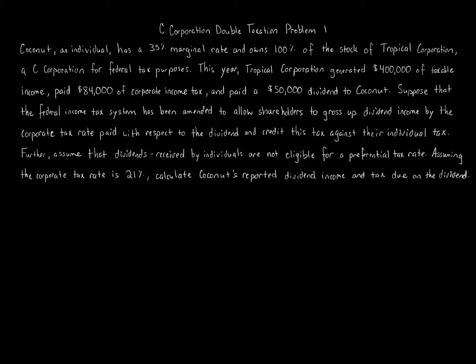We have an individual with a 35% marginal tax rate who owns 100% of the stock of a corporation — it's a C-Corporation. You might be thinking, why are they a C-Corporation? Why aren't they an S-Corporation? We don't know, but that's what we're told.